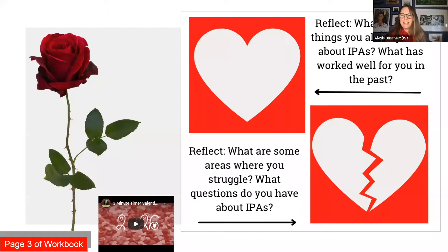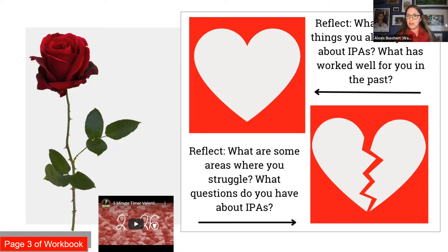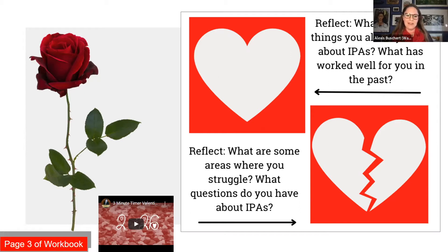First, we're going to do a little 'Roses and Thorns' activity. If you were here last week you can reflect on what you learned; if not, just reflect on your own assessment experience as a teacher. Your roses — the full heart — are: what do you already know about IPAs or assessment, and what works well for you? Your thorns — the broken heart — are: what areas are still a struggle, or what questions do you have about IPAs? This is on page three of your workbook. We'll give you three minutes of quiet to reflect and write those answers.